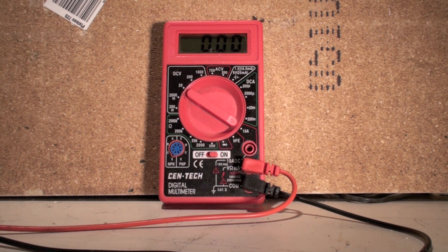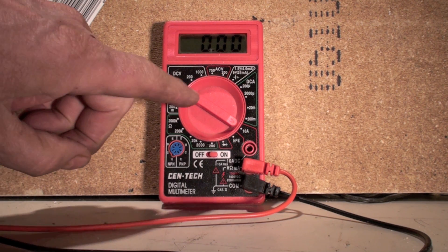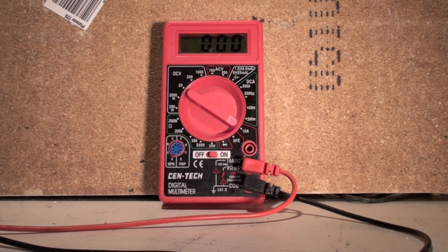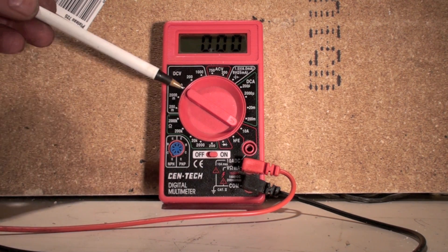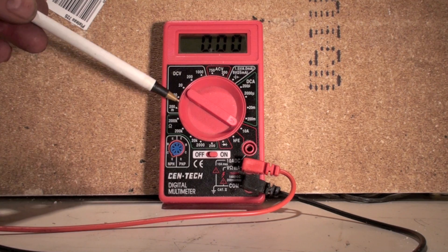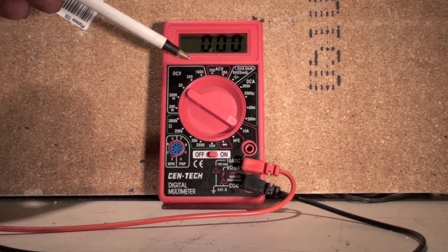You've got this dial here and the dial is used to put it in the position you want. Where the arrow goes is the position you want. If you're positioned here, you'd be in DC volts.